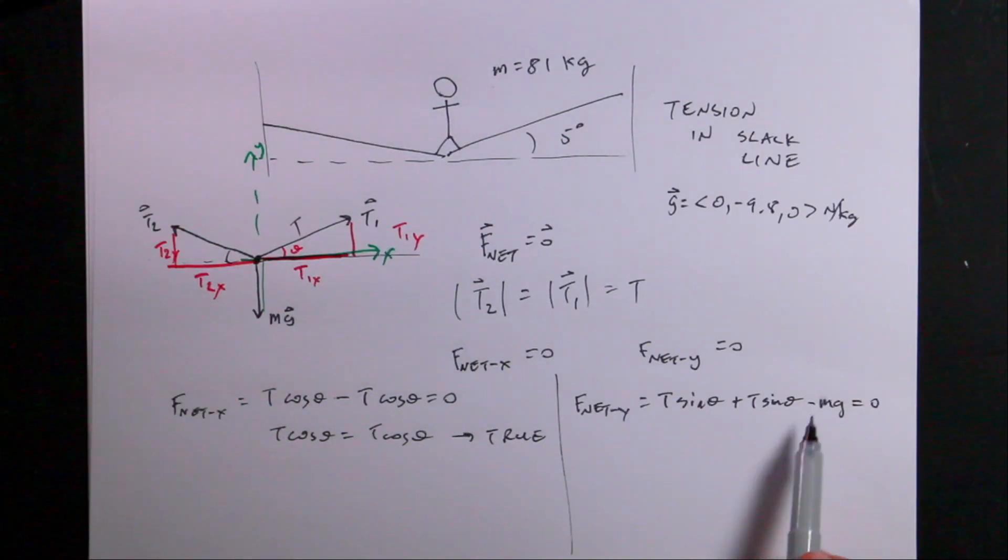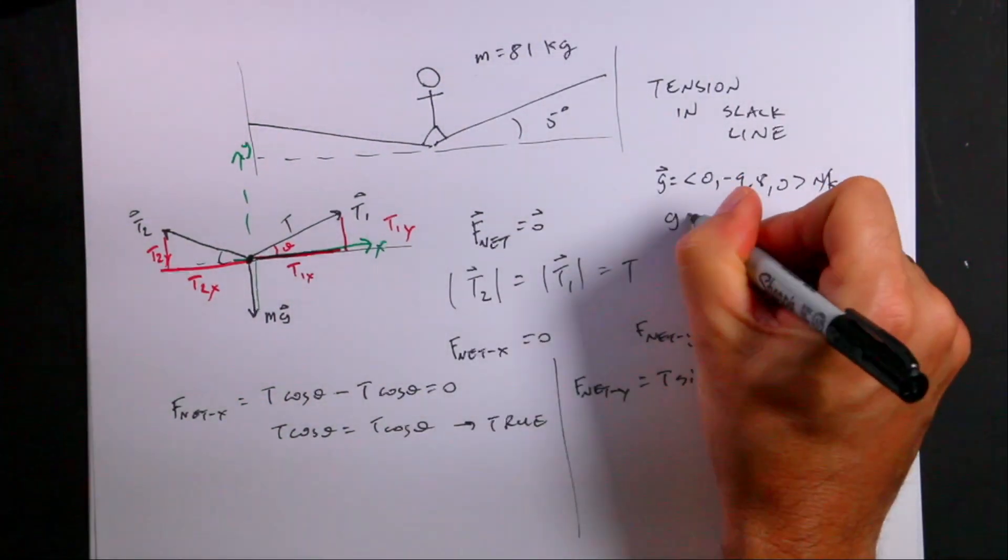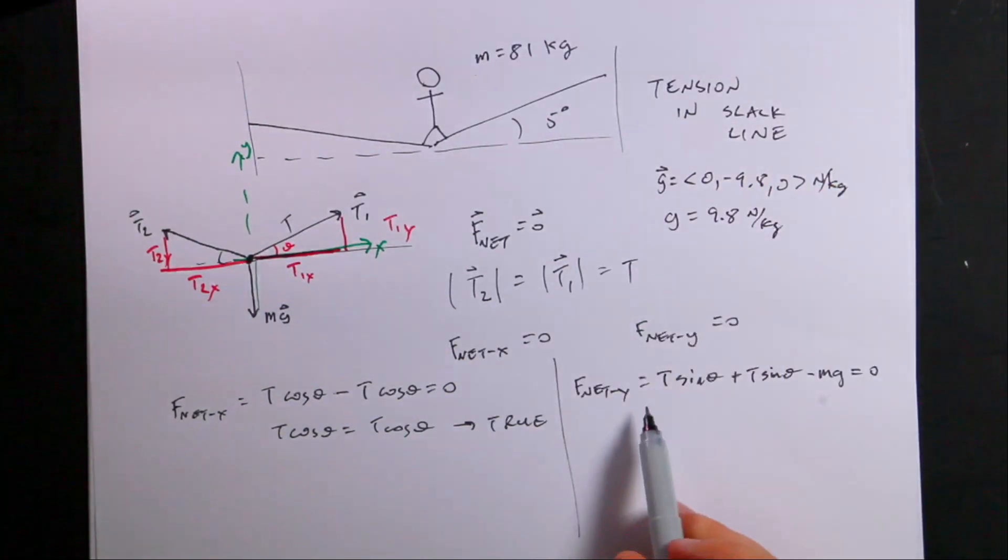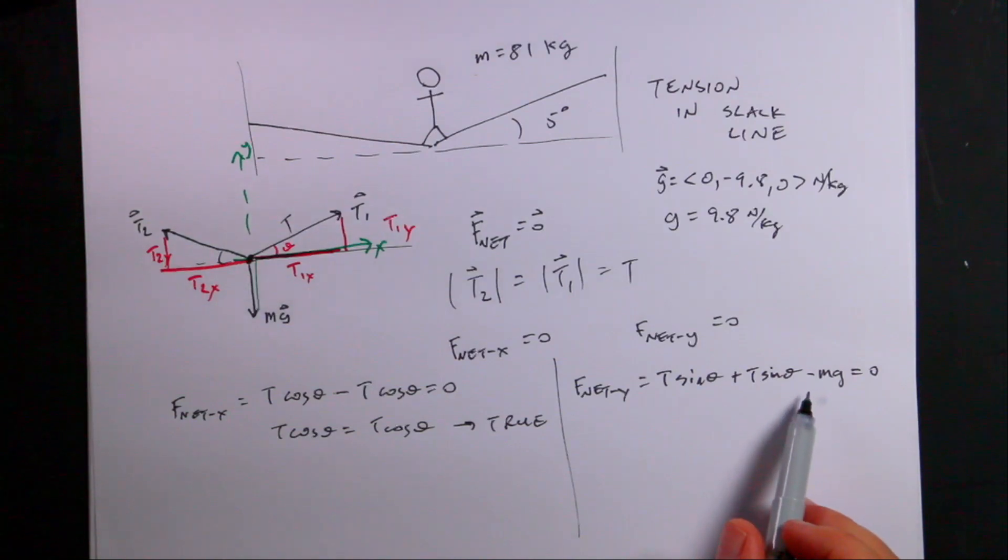And so I put minus mg because here we're saying g is the magnitude of that gravitational field of 9.8 N per kilogram. So now can I solve this for T? Yeah, I can.